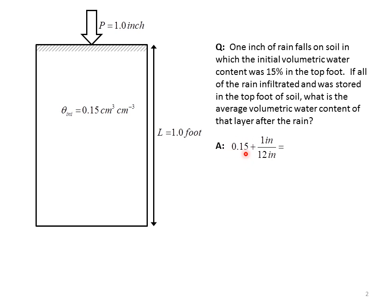So this 15%, we could express it as 15 inches of water in 100 inches of soil. If you think of it that way, then it's easy to see that for the new water, we just add one inch of precipitation or new soil water stored in 12 inches of soil. I'm assuming here that you know that 12 inches is equal to one foot. So just by evaluating this simple expression, we can get our new soil water content.